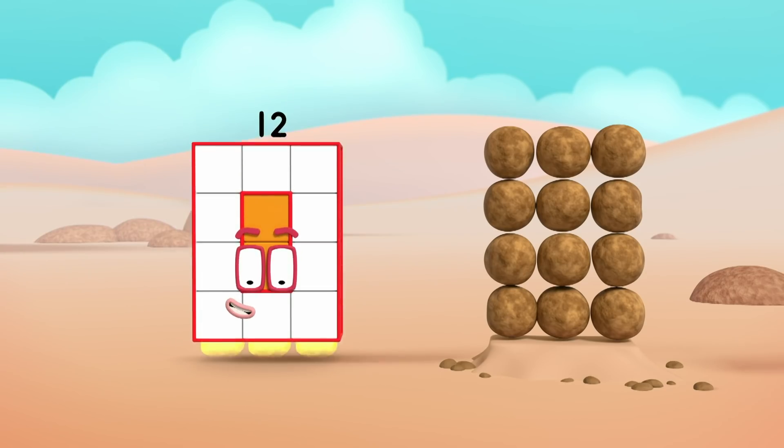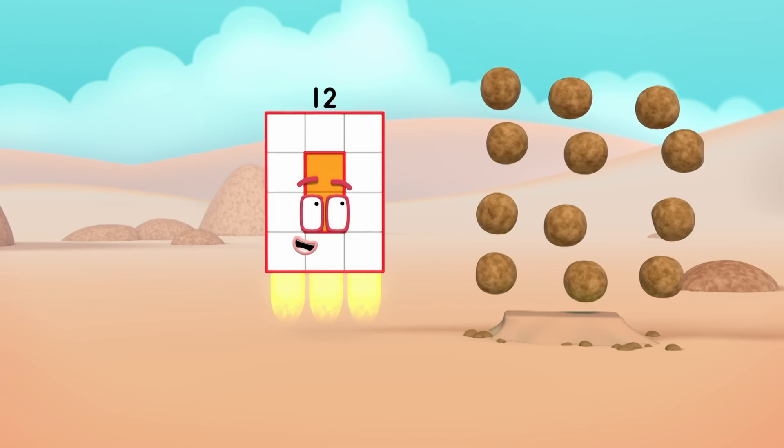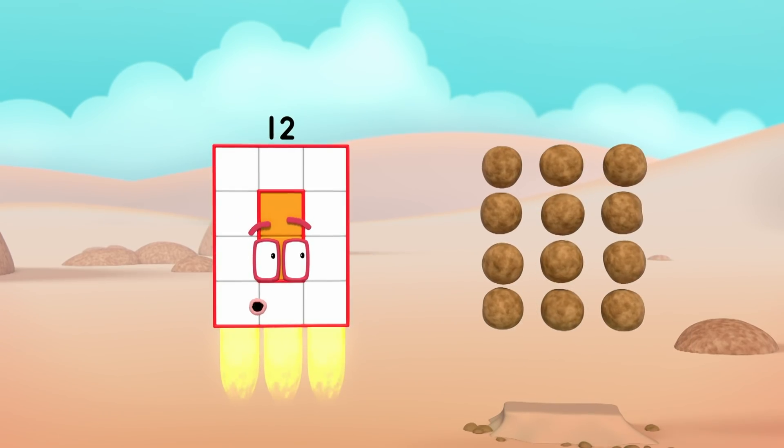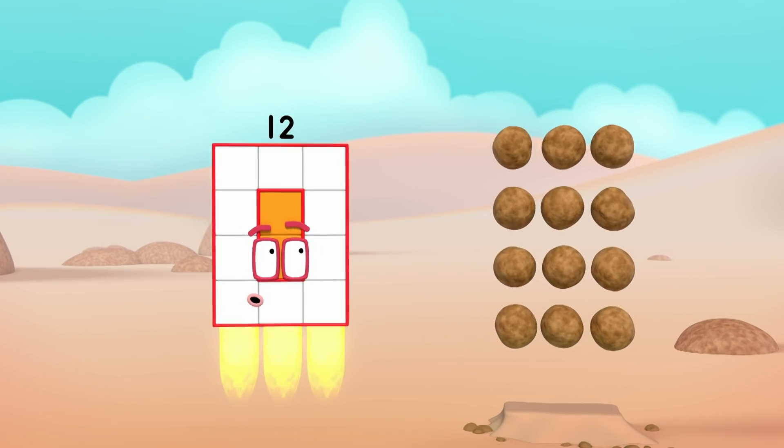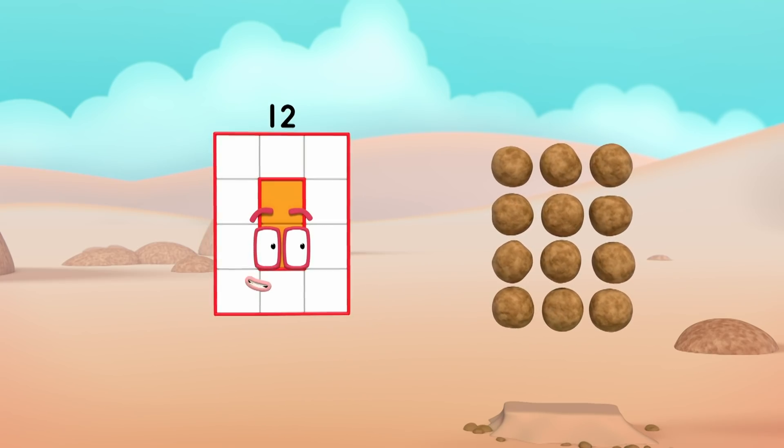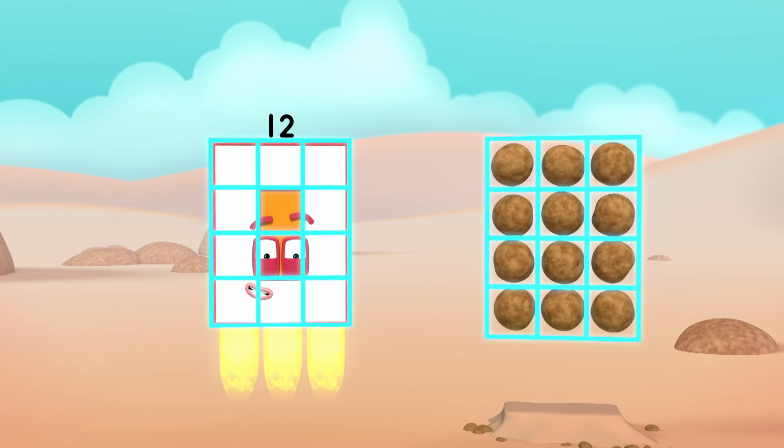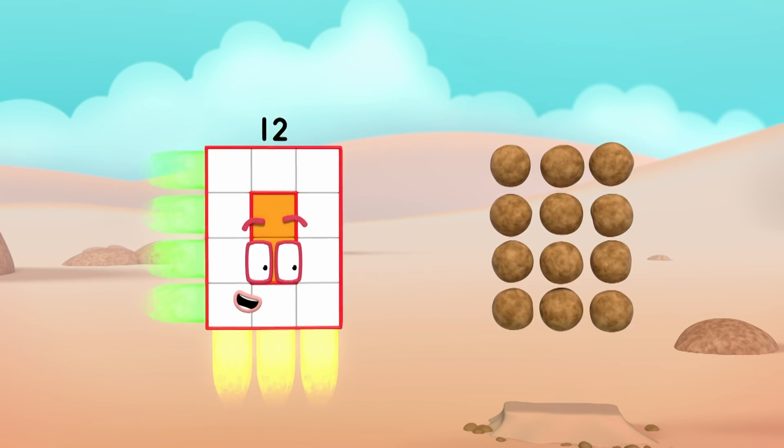My blocks are in columns and rows. My blocks are in columns and rows, and that's called an array. Array. Hey, array. Hey.